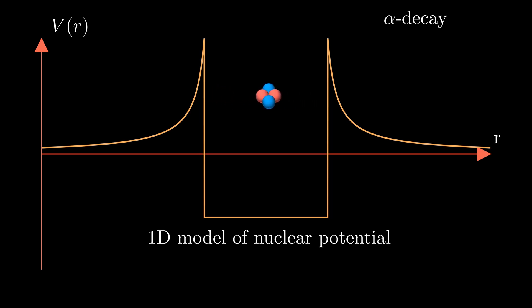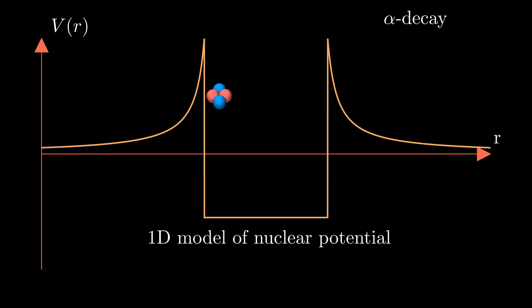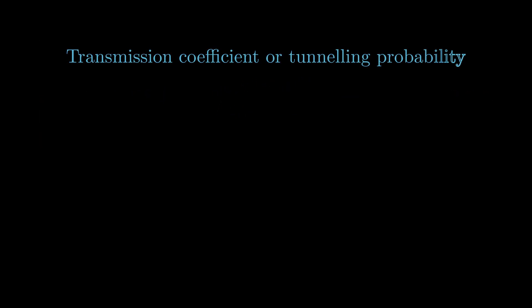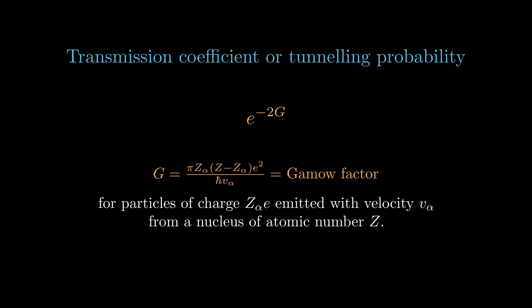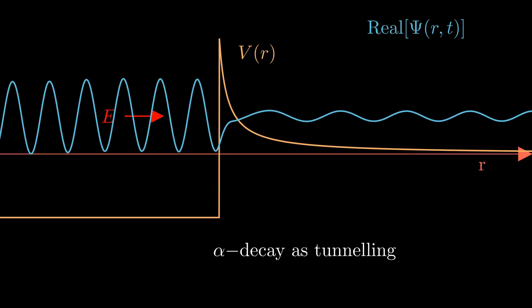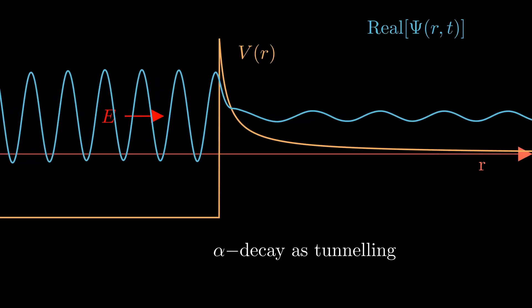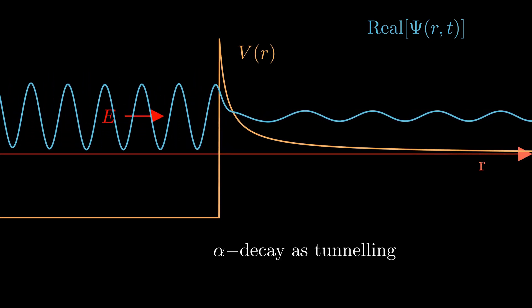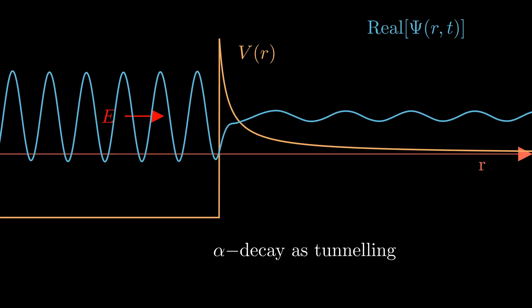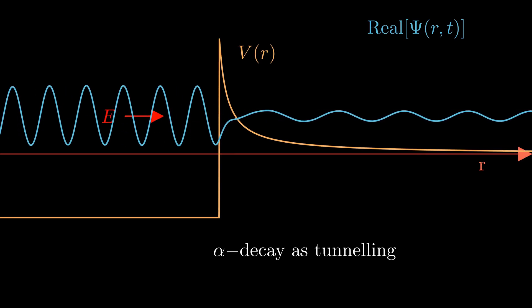Rutherford could not reconcile this paradox. But for Gamow, the answer was in the newly emerging field of quantum mechanics. He recognized it as a case of matter wave penetration or quantum tunneling through the potential barrier. Returning to his room from the library, Gamow devised a simple formula to calculate the probability of this escape. And it matched perfectly with experimental data. Gamow's explanation of alpha decay through quantum tunneling was a major success of the quantum theory and a testament to its power in solving seemingly insurmountable problems.